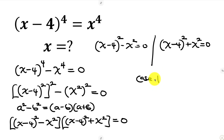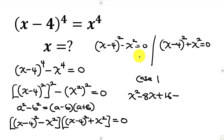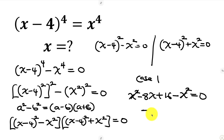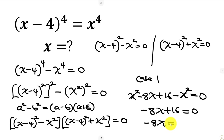We start with Case 1. For Case 1, I'm going to be expanding the bracket. On expansion I'll have x squared minus 8x plus 16 — expanding this bracket — minus x squared, and this is equal to 0. Simplifying further, you see that x squared cancels out x squared, leaving behind negative 8x plus 16 equal to 0.